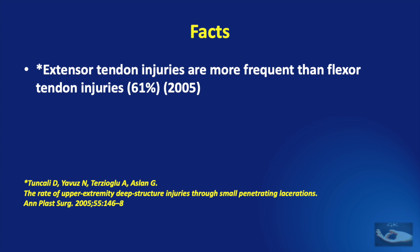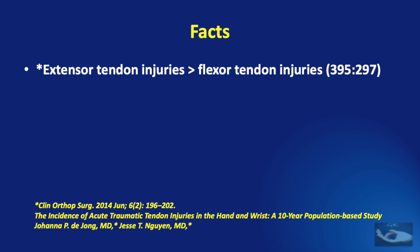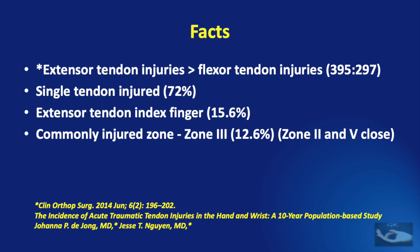Another study in 1954 found that the most commonly injured extensor was in the long finger and the most commonly injured zone of the extensor was zone 6. A study in 2014 also said extensor tendon injuries are more frequent than flexor tendon injuries. That study said it was commonly a single tendon injury in about 72% of cases. The extensor tendon of the index finger was commonly injured and the commonly injured zone was zone 3, with a close second by zone 2 and zone 5. So whatever the period in which the study has been done, the extensor tendon injuries are always more common than flexor tendon injuries, and only the pattern of extensor tendon involvement changes.